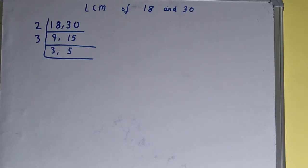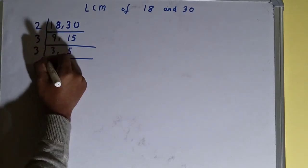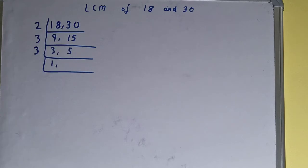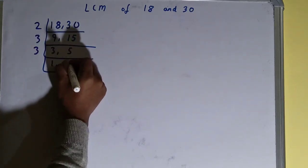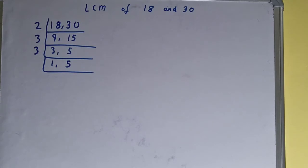Now again, if we check: is any of the number divisible by 3? Then only the first number is divisible by 3, not the second one. So we'll divide, and this 3 will become as 1. Now this 5 is not divisible by 3, so we'll just copy this down. We'll not touch it.